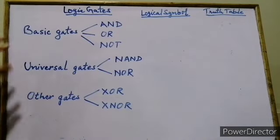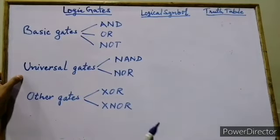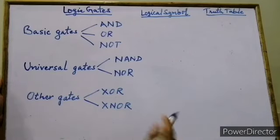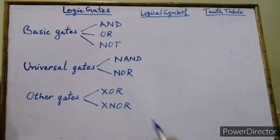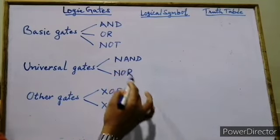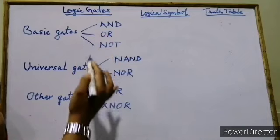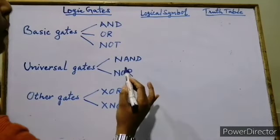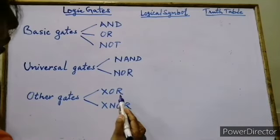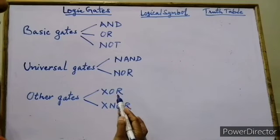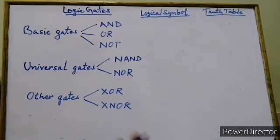There are 3 basic logic gates: AND gate, OR gate, and NOT gate. These are the basic gates. And there are 2 universal gates — NAND gate and NOR gate. Why are we calling them universal gates? Because by using NAND gate or NOR gate, we can design any of the other gates — AND, OR, NOT — anything we can create using only NAND and NOR. Some other gates are also there: XOR and XNOR. XOR is exclusive OR and XNOR is exclusive NOR. So now we will see the logical symbols for all gates.